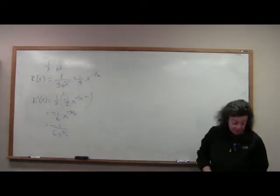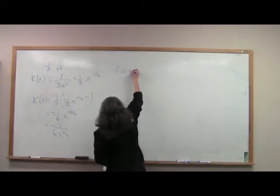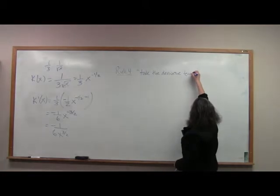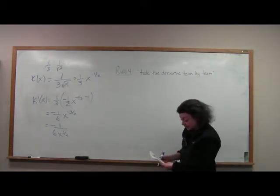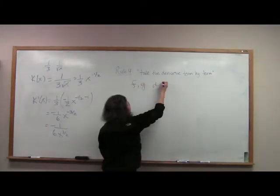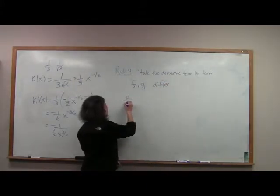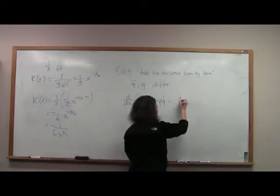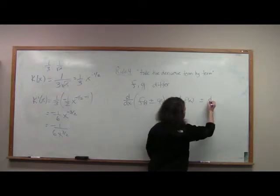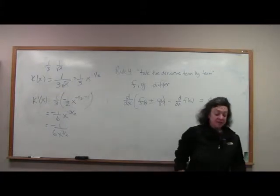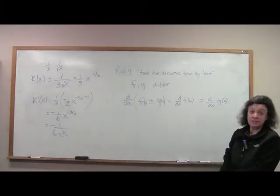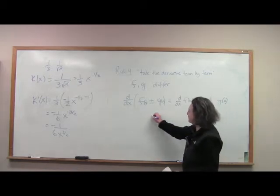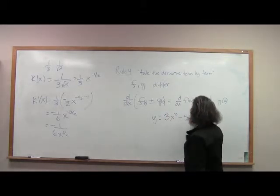The last rule covered in this section says: in practice, take the derivative term by term. If f and g are both differentiable functions, then the derivative of f plus or minus g is equal to the derivative of f plus or minus the derivative of g. We're going to take our derivative term by term. For example, let's work with 3x squared minus 5x plus 8.